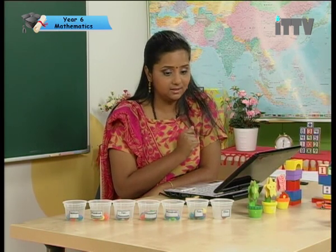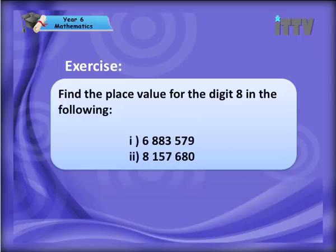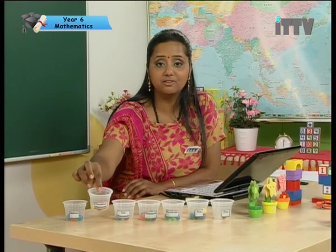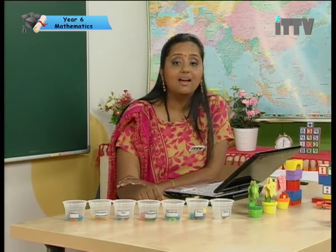Okay, let's try a quick question. Find the place value for the digit eight in the following. The first number — how many eights do you have? Yes, two. The first digit eight is in the ten-thousand place value, so its value is eighty thousand. Very good! What about the second digit eight? It's in the hundred-thousand place value, hence the value is eight hundred thousand.